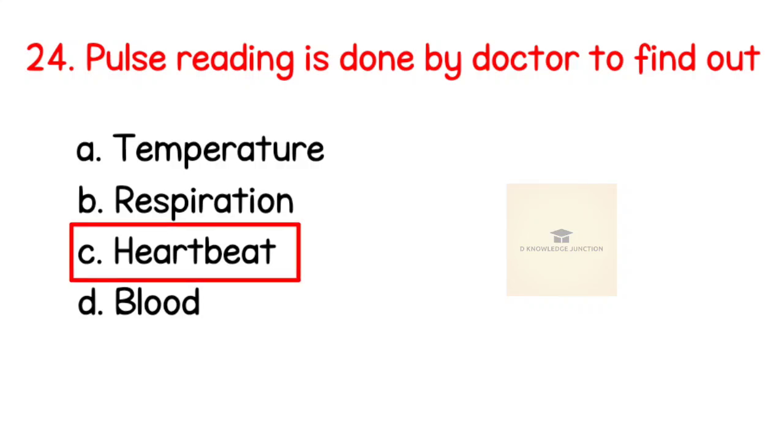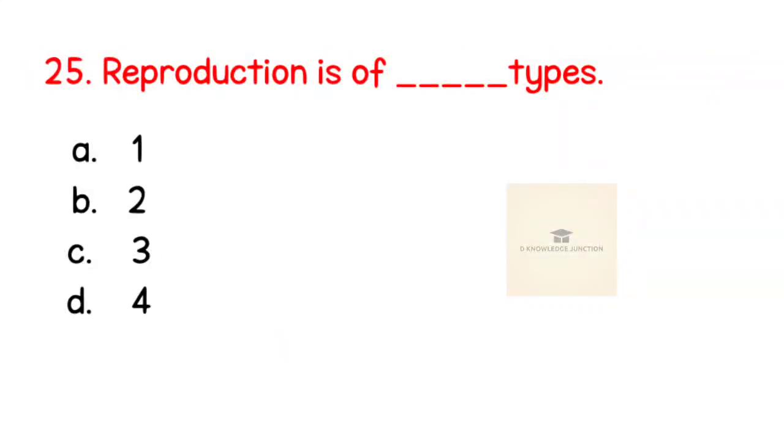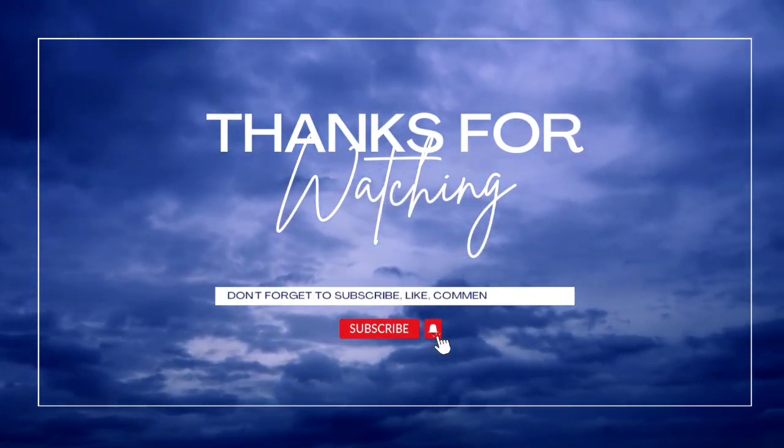Next question: Pulse breathing is done by doctor to find out? Right answer is heartbeat. A bat is related to which of the following? Right answer is mammal. Last question: Reproduction is of how many types? Right answer is 2.